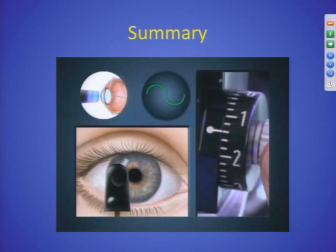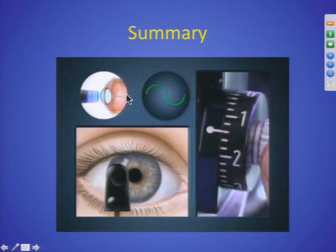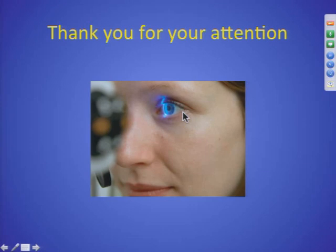To summarize: how do we measure the pressure? We put the drops in, we put in the dye, we apply the force with a blue light — this is what I see — we turn the wheel, and then we know what the pressure is. Thank you very much.